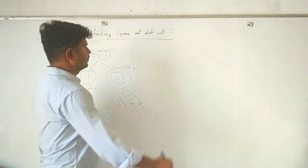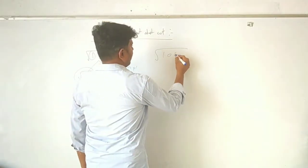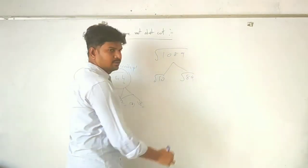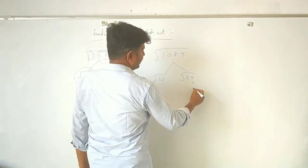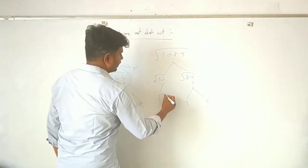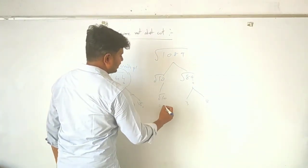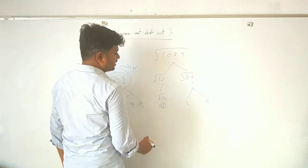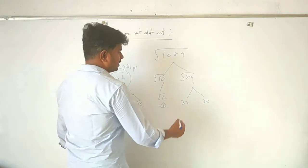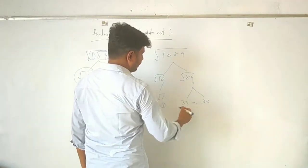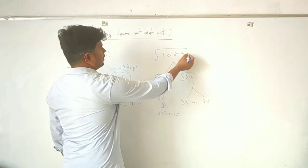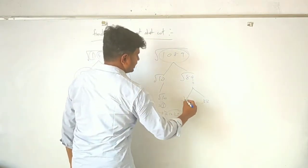Take another example: 1089. Divide into groups: root(10) and root(89). The unit digit 9 gives 3 or 7. Root(10) is approximately 3 point something, so take 3, giving candidates 33 or 37. Find 35 squared equals 1225. Since 1089 is less than 1225, the answer is 33.